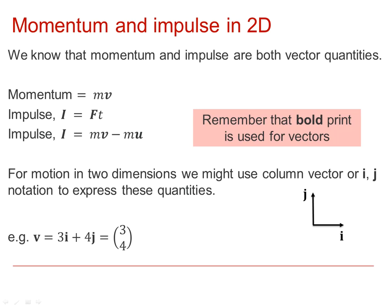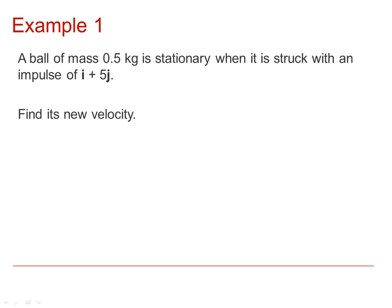We're going to consider now just a few questions which use the idea of vectors when we're considering these momentum and impulse equations. In the first question, we've got a ball mass 0.5 kilograms, which is stationary, and it's then struck with an impulse of i plus 5j.